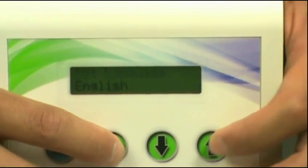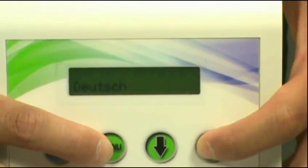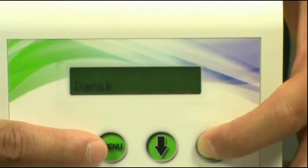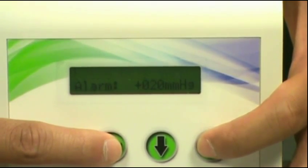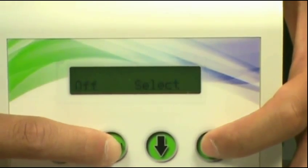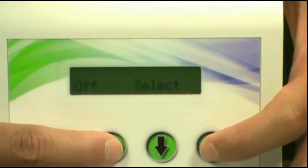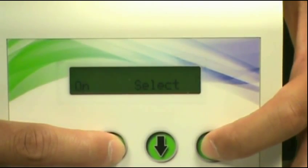First option will be your language option. You can scroll through all the languages by pressing up or down button. We will stick with English at this time. Press the menu button again. It will take you to the pressure tolerance option. Press menu again. It will take you to the intermittent or variable option. Press up or down button to set on and off.